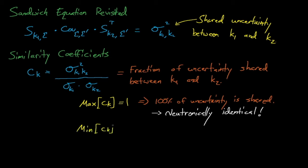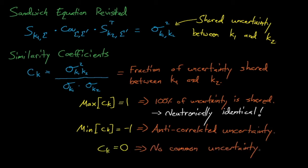A c-sub-k of zero indicates that the systems overall have no shared sources of uncertainty, but zero is actually not the smallest c-sub-k possible. A c-sub-k of negative one indicates that the benchmarks are anti-correlated. In other words, for these anti-correlated cases, a piece of uncertain nuclear data that causes a positive bias for one system would cause a negative bias in the other system. In general, few systems have negative c-sub-k's, but they do exist.